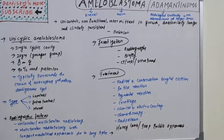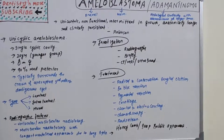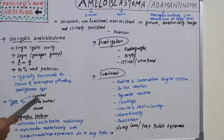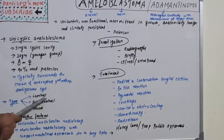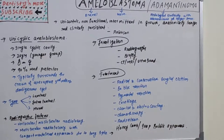The gender predilection in unicystic ameloblastoma is the same as multi-cystic — male and female have equal chances. It is most commonly seen in the mandible in about 90% of cases, typically in the posterior part, and it typically surrounds the crown of an unerupted third molar. It has three subtypes: luminal — confined to the luminal surface of the cyst by fibrous connective tissue; intraluminal — tumor nodules project from the cystic lining; and mural — tumor infiltrates the fibrous cystic wall.